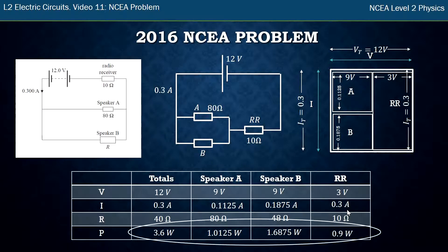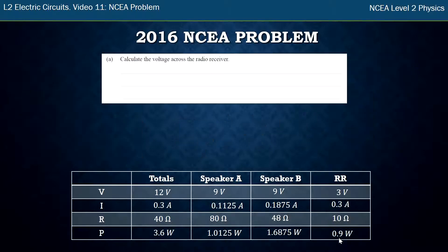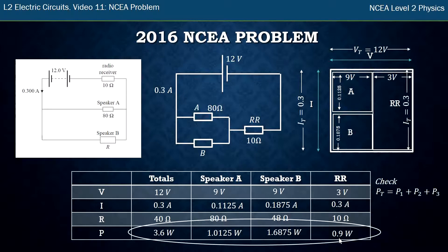Now I can do a check and make sure the powers add up together so that this one 0.1, 1.01, 1.68 and 0.9 add together. And when I do it on my calculator it actually works out nicely. So I've got that right.